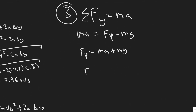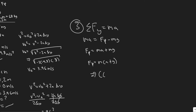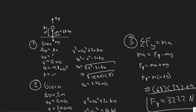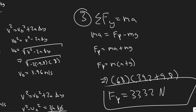Factoring out m: F_p = m(a + g). Plugging in: mass is 68 kg, acceleration is 39.2 m/s², and g is 9.8 m/s². So F_p = 68 × (39.2 + 9.8) = 68 × 49.0 = 3,332 Newtons. The force that our jumper exerts against the ground in order to jump 0.8 meters is 3,332 Newtons.